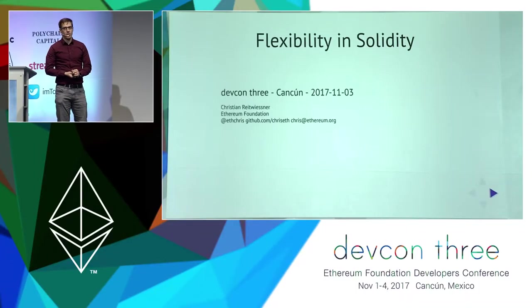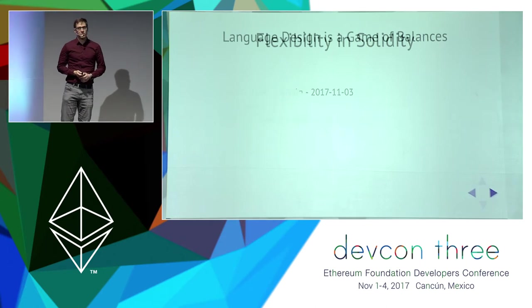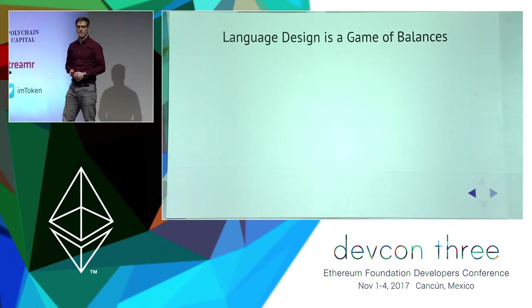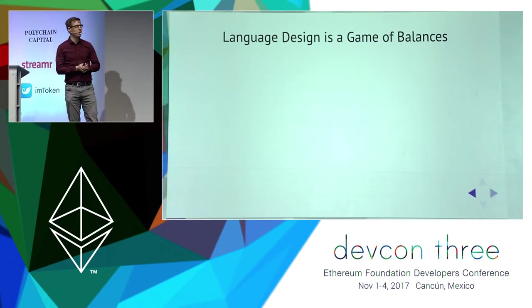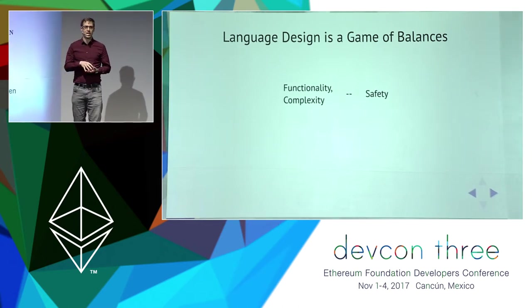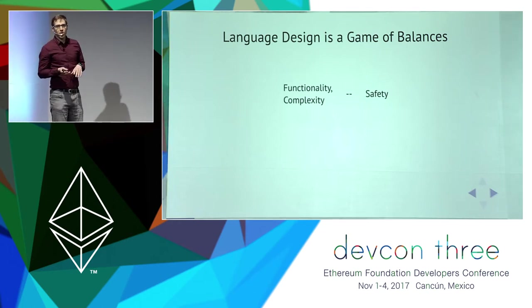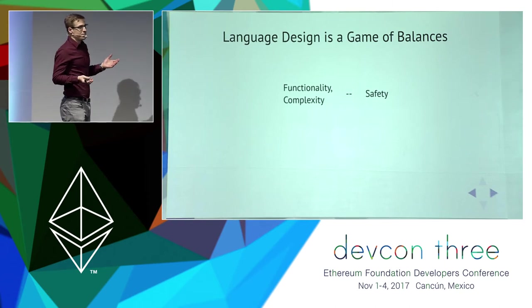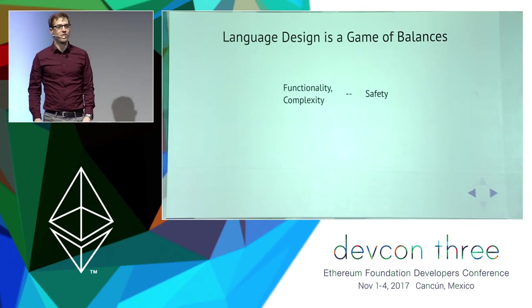When you design a programming language you have to make compromises constantly. There are people who request features, and of course features are nice, but with each new feature the language gets more complicated and thus harder to understand. It's easier to make a mistake the more complicated the language is. So you have the constant balance between functionality and safety.